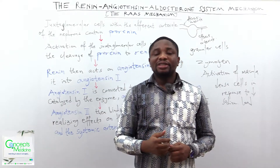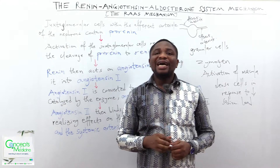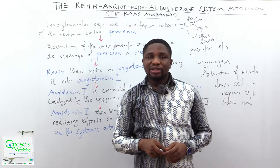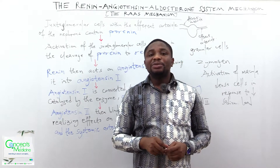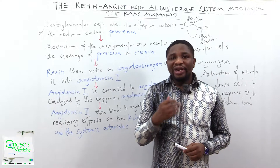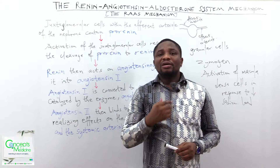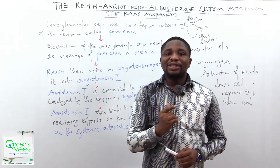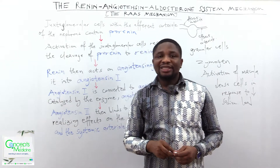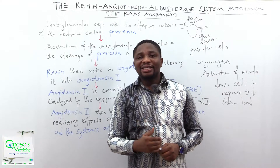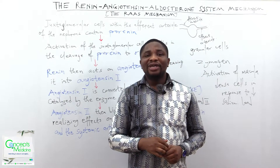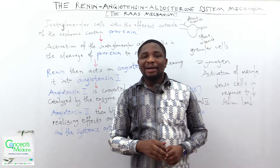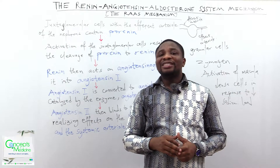Renin released into circulation then acts on angiotensinogen, which is also a zymogen and is produced in the liver. Renin acts on angiotensinogen, causing its cleavage into angiotensin-1. Angiotensin-1 is a precursor for angiotensin-2, and it is converted to angiotensin-2 by an enzyme known as angiotensin-converting enzyme.